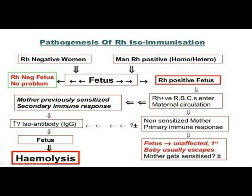Pathogenesis of RH isoimmunization: if the mother is negative and father is positive, and the fetus is also negative, there is no problem. But if the baby is RH positive, RH positive blood enters the maternal circulation. In a non-sensitized mother, a primary immune response occurs and the fetus is usually not affected in the first pregnancy — the baby usually escapes, but the mother gets sensitized. If previously sensitized and the second baby is also positive, a secondary immune response occurs with increased isoantibody IgG, which enters the fetus. If the baby is positive, hemolysis usually occurs.